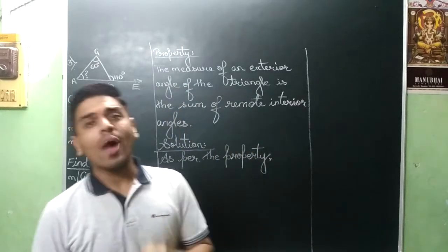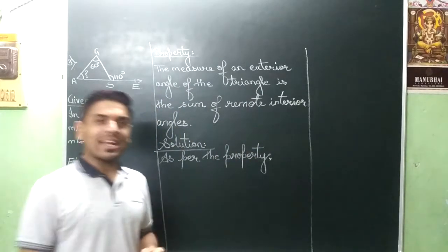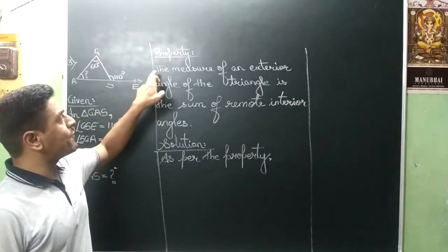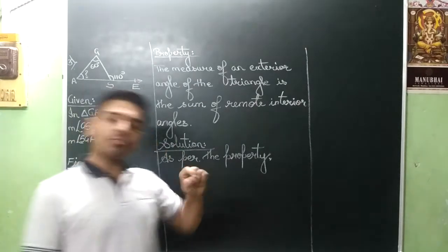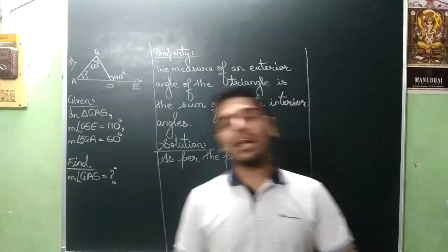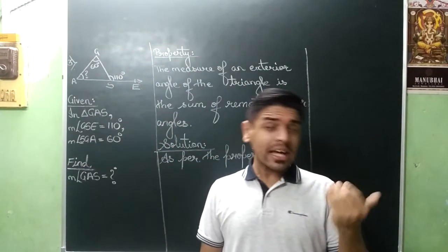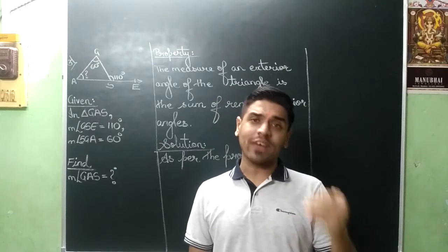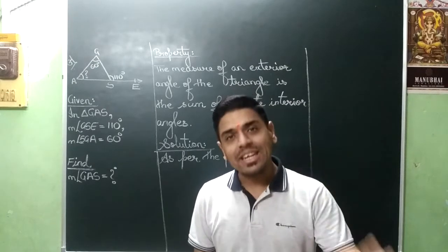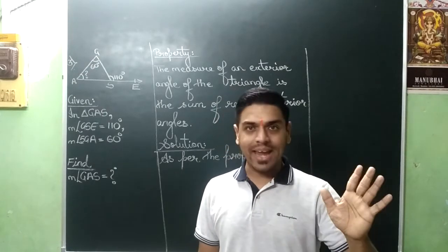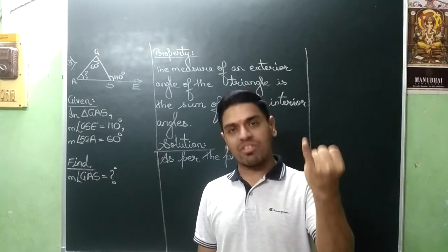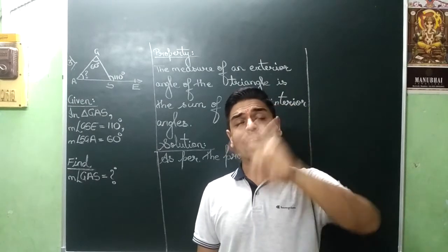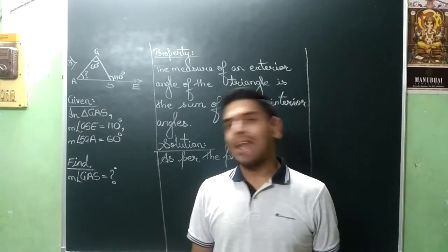And there you have only one property and the property is: the measure of an exterior angle of the triangle is the sum of its remote interior angles. Correct? This is the property. This is the exterior angle, triangle, remote interior angles. All these names have to come.